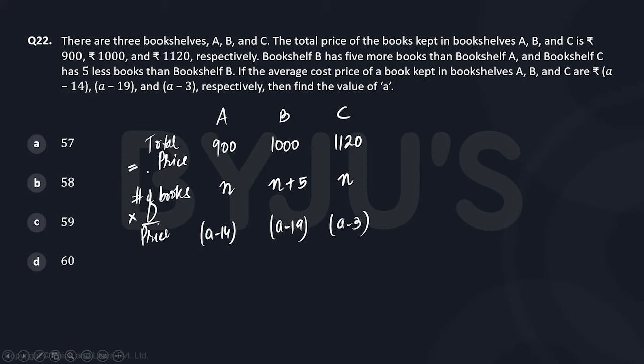So using this formula for bookshelf A, we can say that n×(a-14) = 900. For bookshelf B, we can say that (n+5)×(a-19) = 1000. And for bookshelf C, we can say that n×(a-3) = 1120.